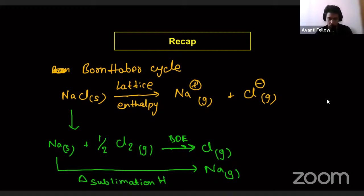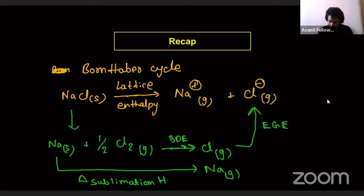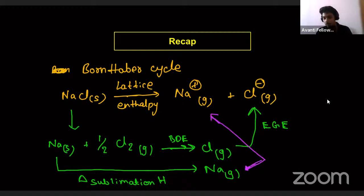After atomization, we gave an extra electron to chlorine, which gave rise to the Cl⁻ ion. When we are adding an electron to a neutral gaseous atom, this energy is nothing but electron gain enthalpy. We also removed an electron from the sodium gaseous atom, giving rise to Na⁺ ion. When we are removing one electron, that energy is ionization energy.